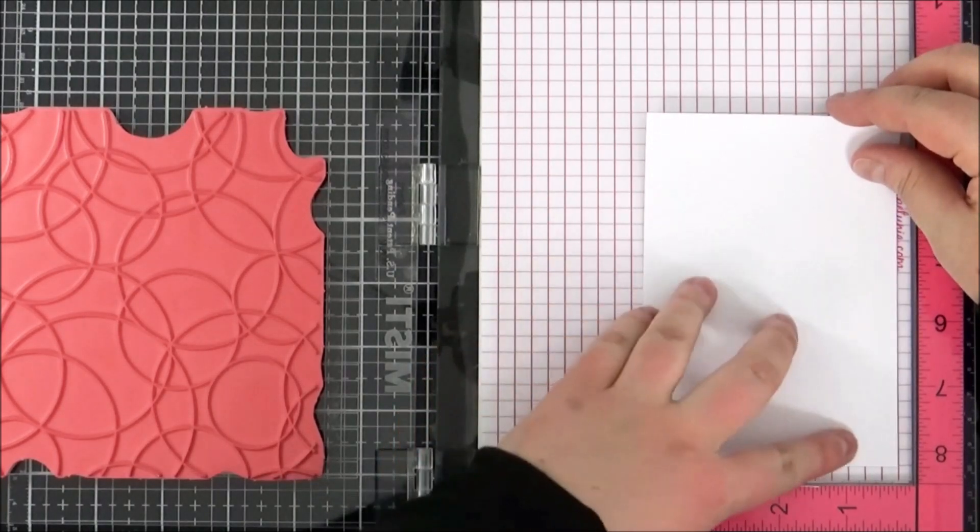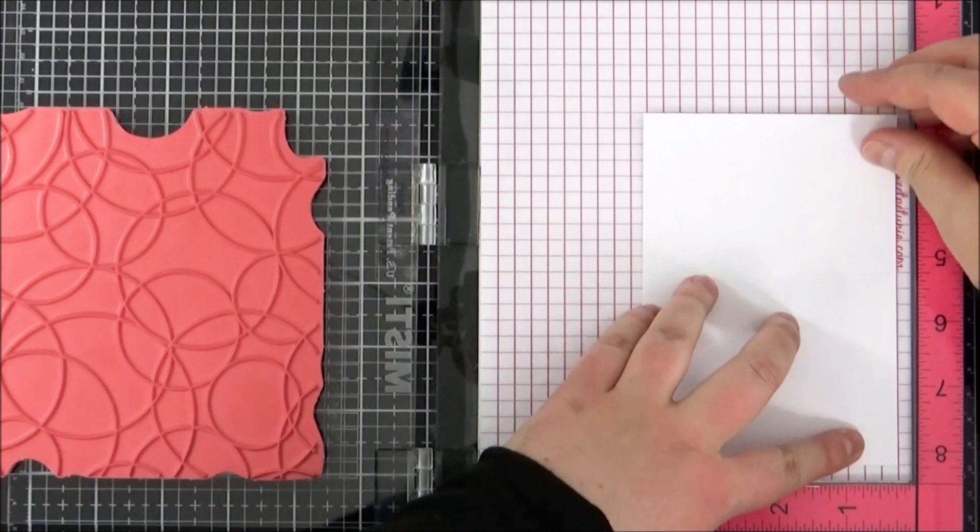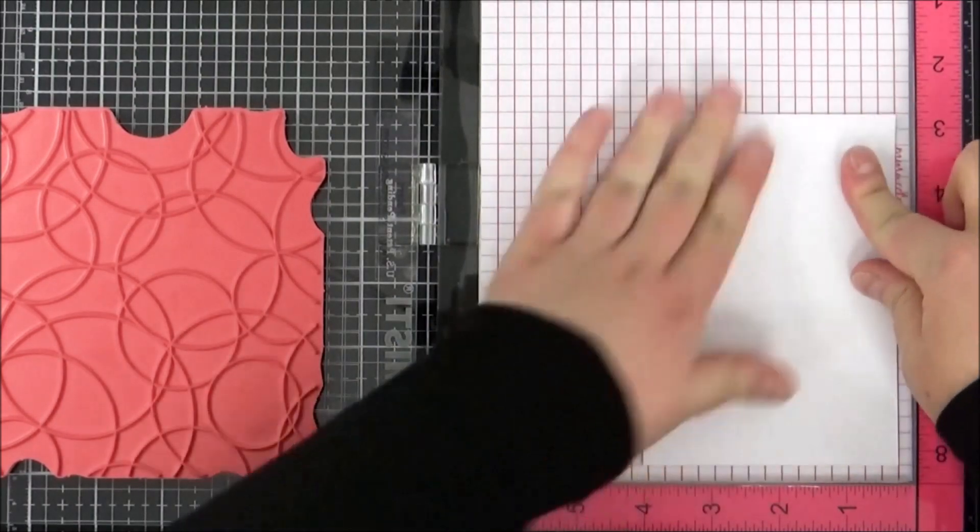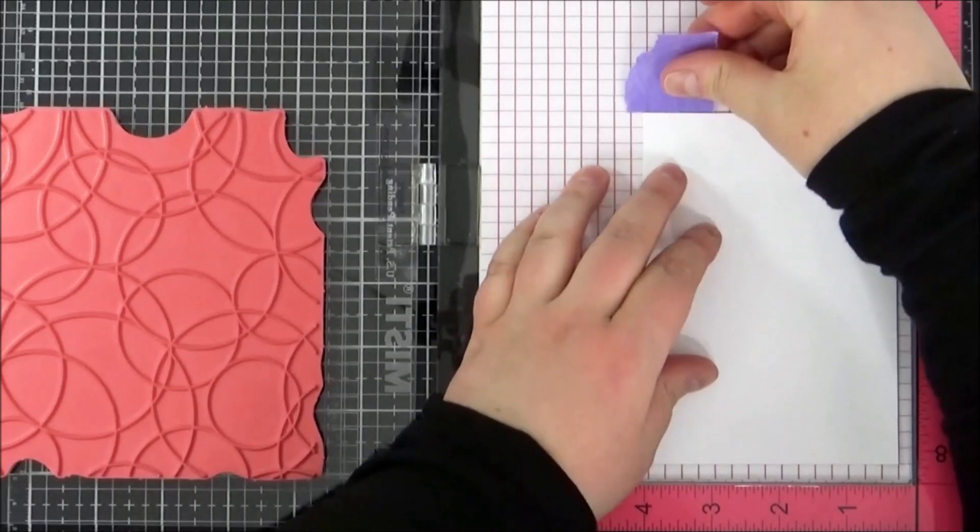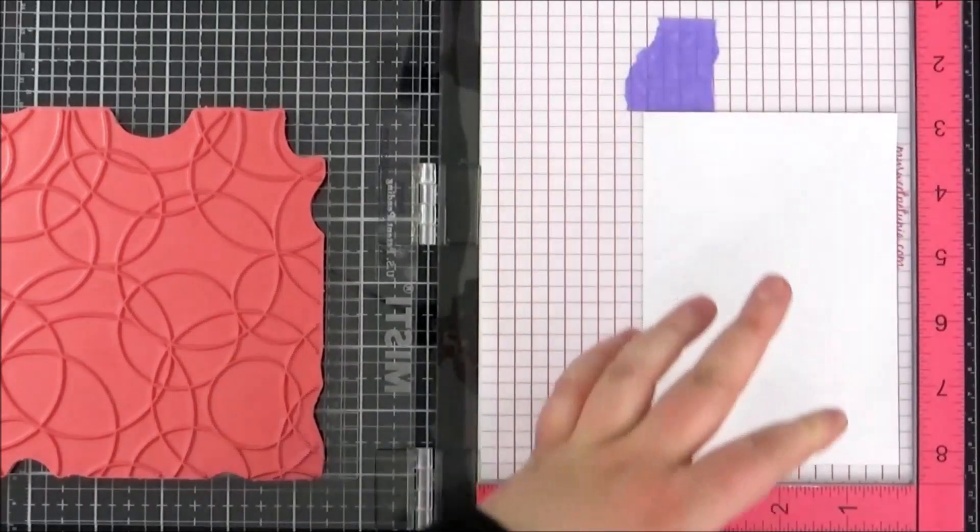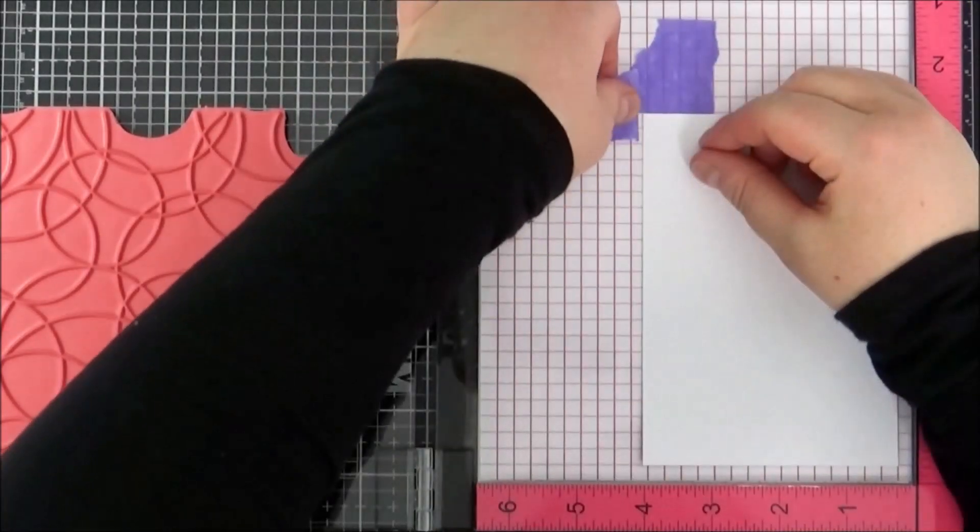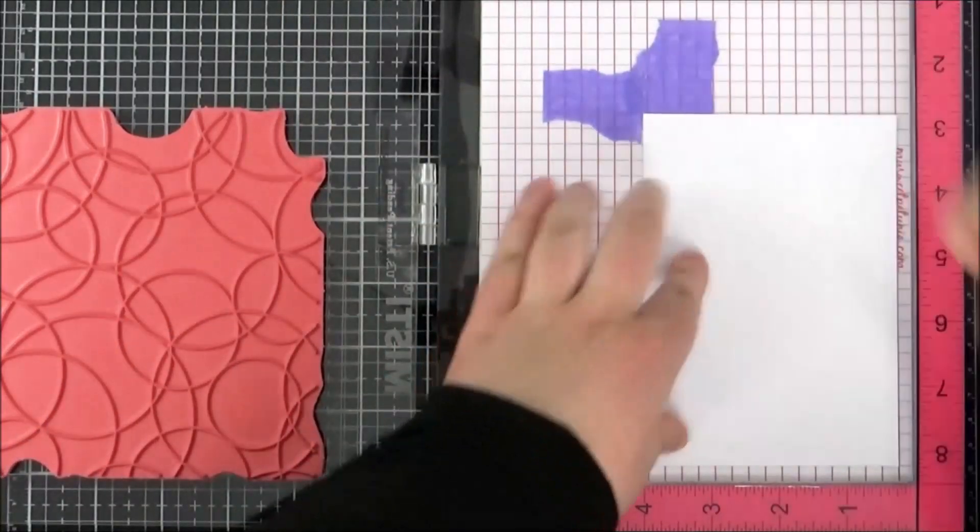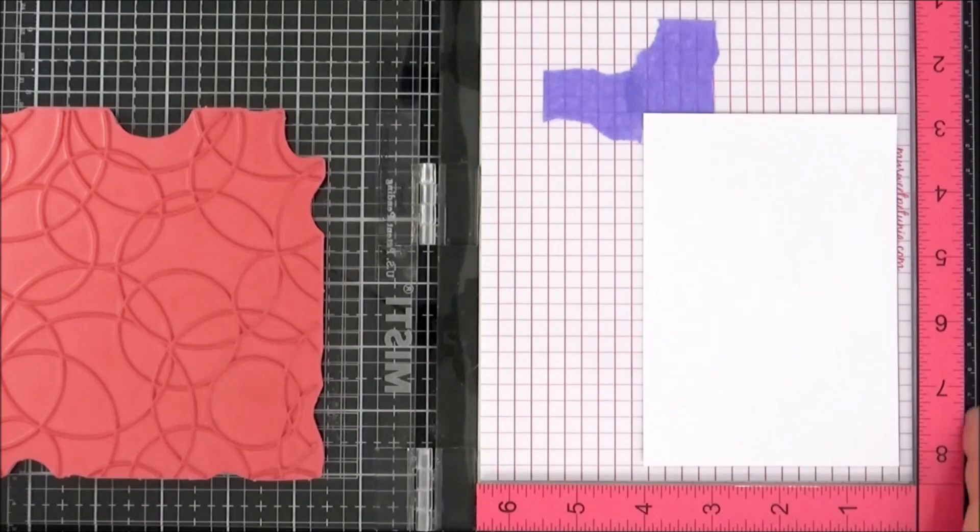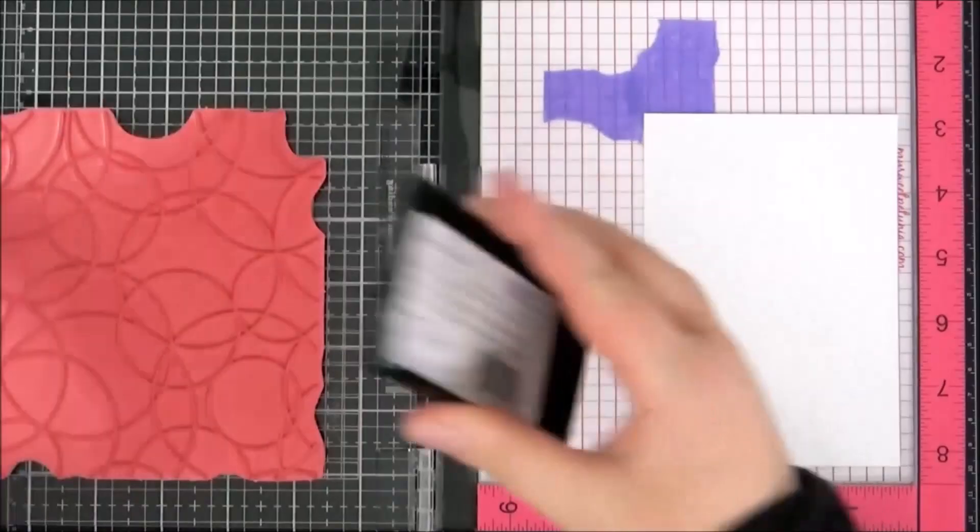I'm going to stick that down with some temporary adhesive because I'm not sticking it right into the corner. With background stamps, sometimes you don't get quite a good impression if you line it right up to the corner. I'm adding some purple tape so I know where to place my next panel when I stamp that.